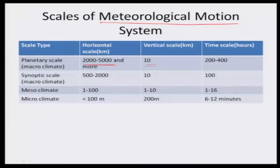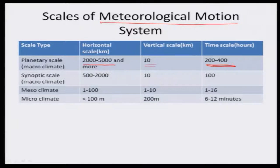From the polar region, the troposphere is 8 kilometers, and from the equator it is 10 to 11 kilometers, so the planetary scale goes up to 10 kilometers depth. The time scale is 200 to 400 hours — once this weather system develops, it stays for 200 to 400 hours, which can be divided by 24 to get the number of days. This is the planetary scale.